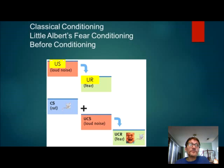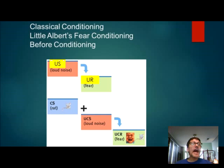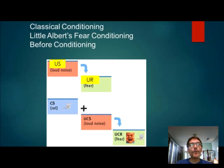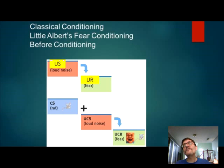Watson demonstrated this with the Baby Albert experiment. Little baby Albert is sitting in the lab, and Watson sneaks up behind him with a hammer and a metal bar, hitting it loudly — baby Albert screams. An unconditioned stimulus (loud noise) leads to an unconditioned response (fear). Watson then brings out a little white rat — Albert enjoys playing with it — but then sneaks up and makes the loud sound again. After five to ten repetitions, Albert screams at the sight of the rat alone, having associated the rat with the loud sound.